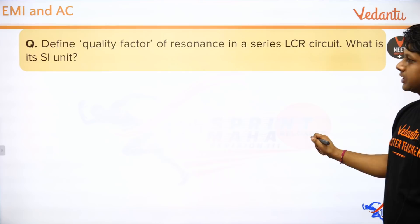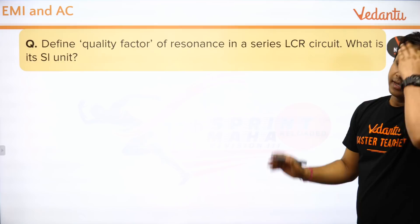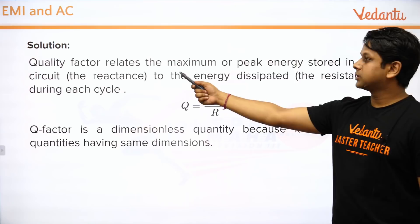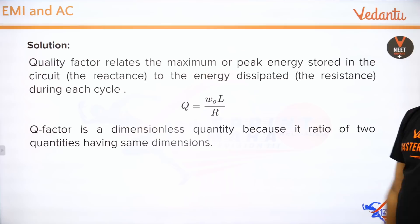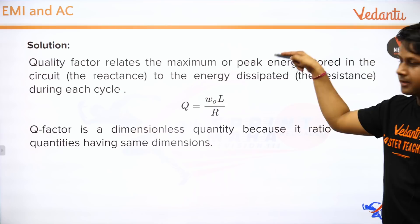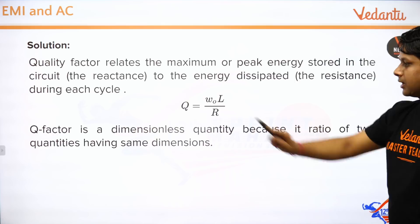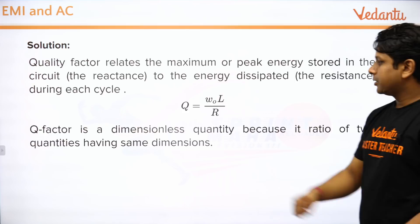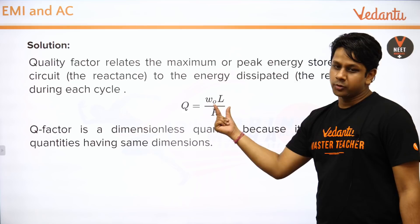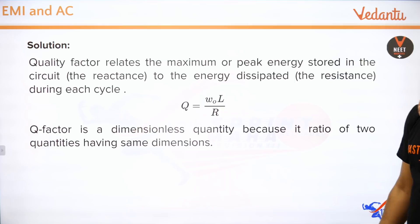Next question: Define quality factor in a series LCR circuit and give its SI unit. Quality factor relates maximum/peak energy stored to energy dissipated. Its formula is Q = ω₀L / R. It is a dimensionless quantity because both ω₀L and R have units of ohm.